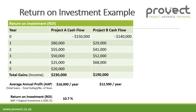The average annual profit — which is the total gain minus the total outlay divided by the number of years, which for project B is four years — is $12,500. The return on investment is 8.9 percent.